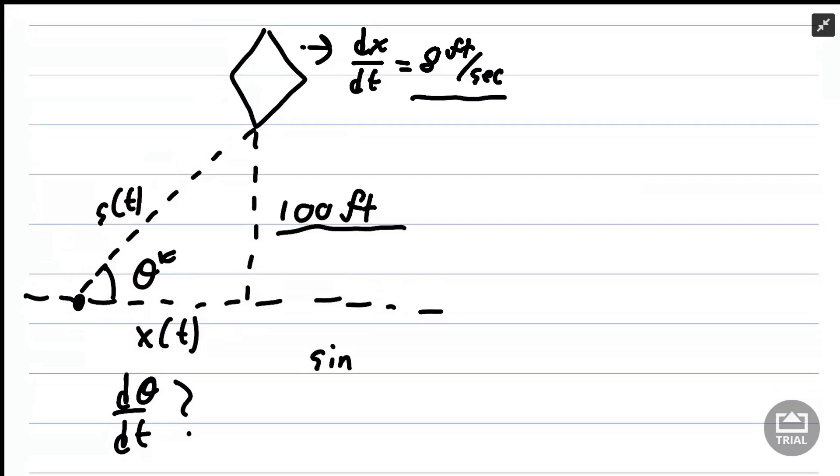I might start with the sine of theta equals our height of the triangle, the opposite side. The height is 100 feet and our hypotenuse is s(t), the length of our string.